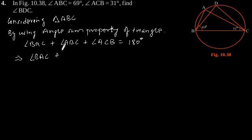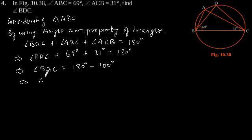Angle BAC plus Angle ABC is given as 69 degrees and Angle ACB is 31 degrees equals 180 degrees. This implies Angle BAC is equal to 180 degrees minus 69 plus 31, which equals 80 degrees.